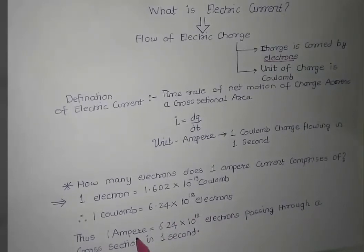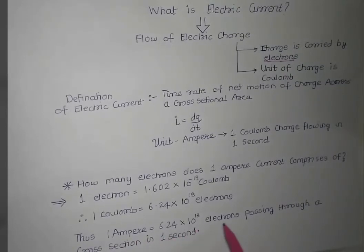Thus you can define 1 ampere as flow of 6.24 × 10^18 electrons through a cross sectional area in 1 second.